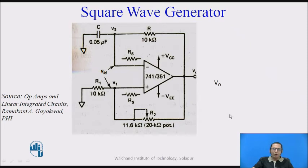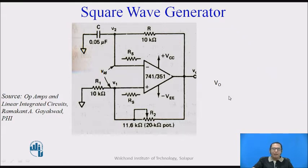One can use a popular op-amp like the 741, and along with that, what I require are a few resistors and a capacitor. So using only a few components and an op-amp, I can design a square wave generator. Now let us first understand how this circuit generates a square wave.